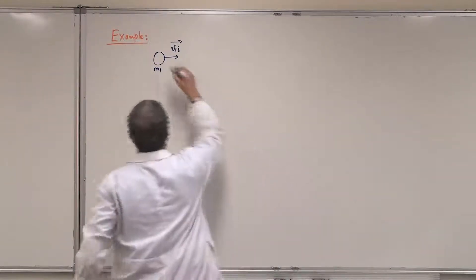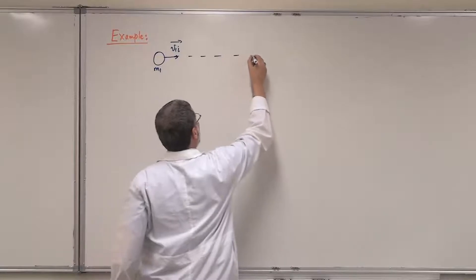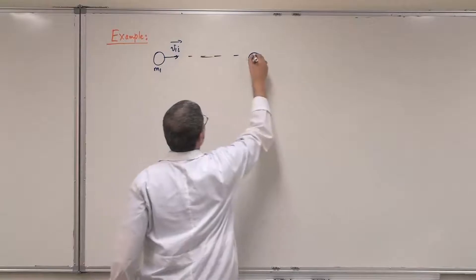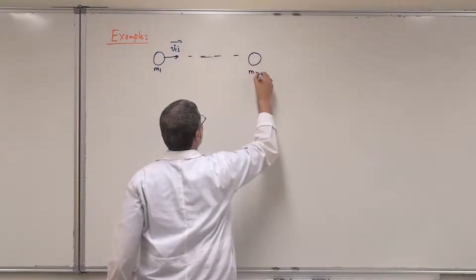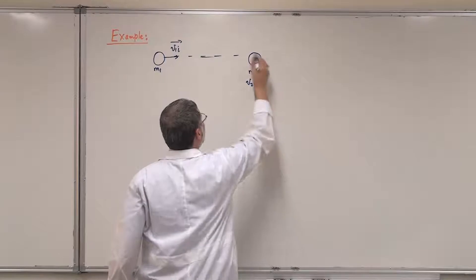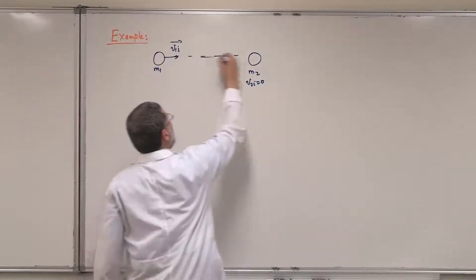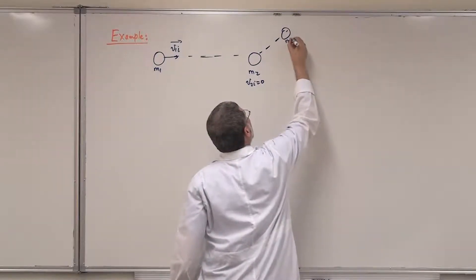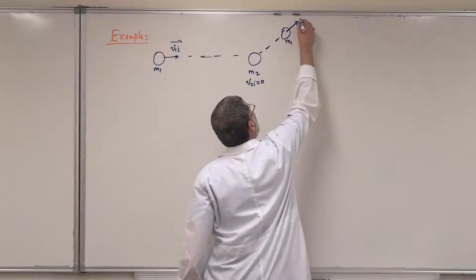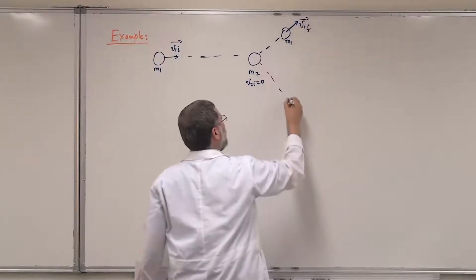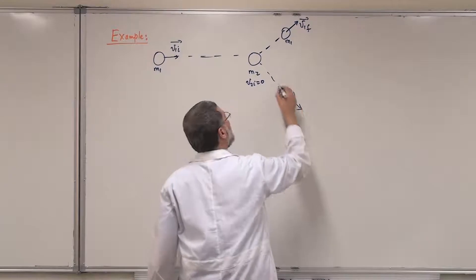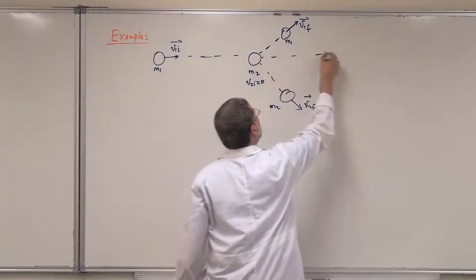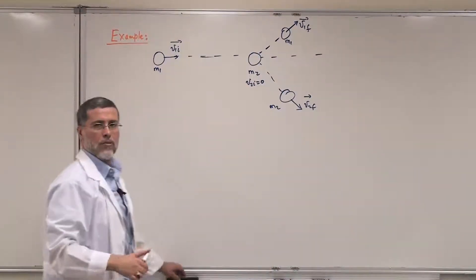I'm going to put the target a little off to the side, because I don't want it to be a head-on one-dimensional collision. So M2 has V2 initial equal to zero — it's at rest. After the collision, M1 will go this way with V1 final, and M2 will go this way with V2 final. This is a two-dimensional problem.